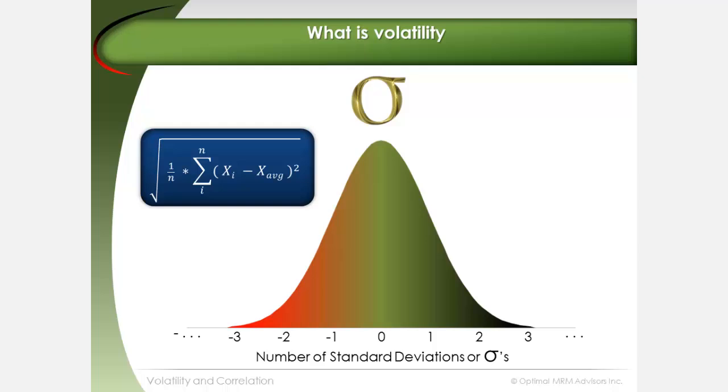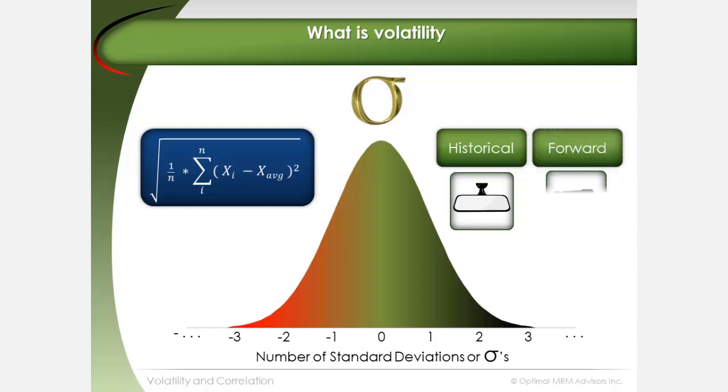Most organizations use historical, or ex-post, risk factor value changes. It would be ideal to use implied volatility, which is forward-looking. However, not all risk factors have developed option markets.